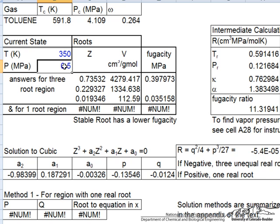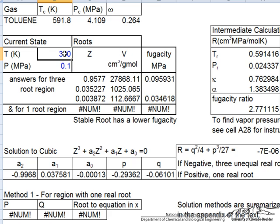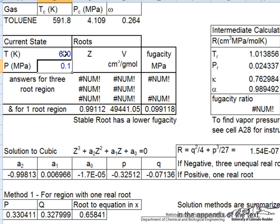Now let's lower this to one atmosphere. Let's suppose we raise the temperature to the other extreme first, 600 Kelvin. Notice we're in the one-root region now—there are no longer three solutions to the equation. Notice 600 Kelvin is above the critical temperature of 591.8, which means there can be only one solution to the equation.